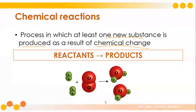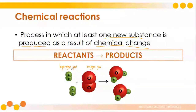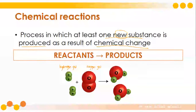Let's take a look at this example. We have here hydrogen gas and we have oxygen gas. Looking at these two, they are the reactants — the hydrogen gas and the oxygen gas is the reactant. Upon interacting with each other, we have a new substance that was produced, which is water.